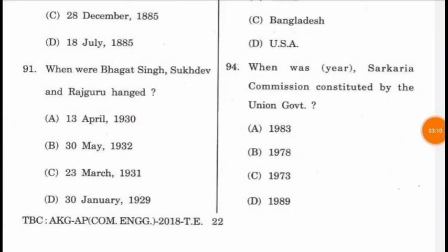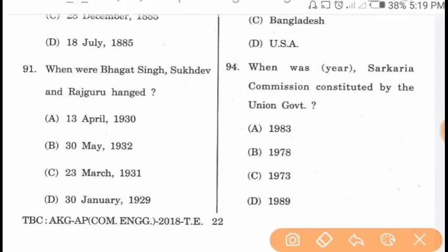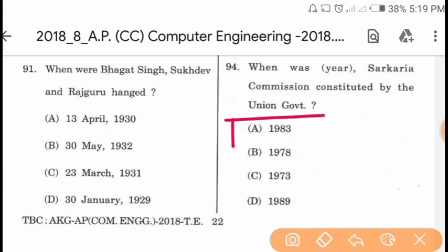Question 94: When was the Sarkaria Commission constituted by the Union Government? It was constituted in 1983 to examine the central-state relationship. The option is correct.